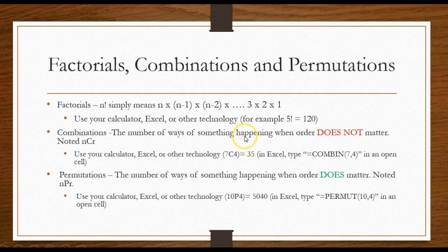Factorials, combinations, and permutations. You can bet on having these types of problems too or some kind of form of them. With factorials I say just always have your calculator or Excel or some other technology ready to go. As an example 5 factorial equals 5 times 4 times 3 times 2 times 1 which is 120. But you know have your calculator have Excel ready to do those. With Excel you just type in equals FACT open parentheses and put whatever number you want to take the factorial of.